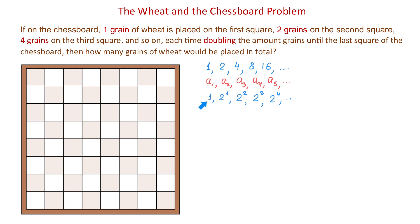I could also write 1 as 2 to the zero power. And now, because the chessboard has 64 squares, the last term will be 2 to the power of 63. That will give us a total of 64 numbers. I will complete this chessboard with these numbers, and you will see how they all fit on the board.